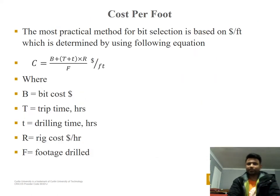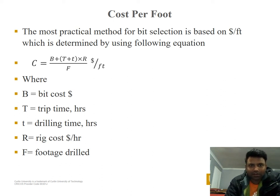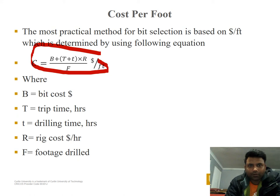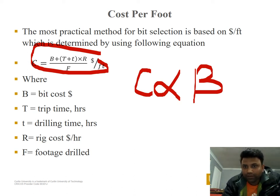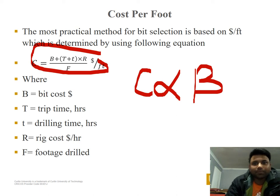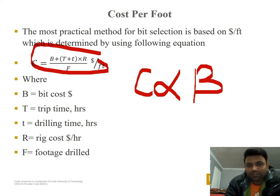Cost per foot is the most practical method for bit selection. It is determined using a formula where C (cost per foot) is directly proportional to B (bit cost) — so if bit cost is too high, cost per foot will also be too high. C is inversely proportional to footage drilled (F).